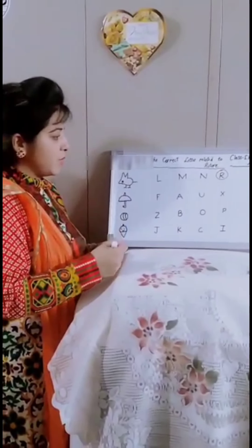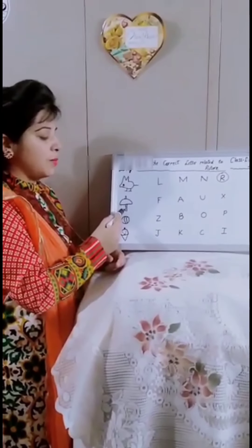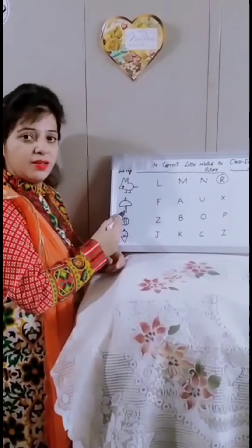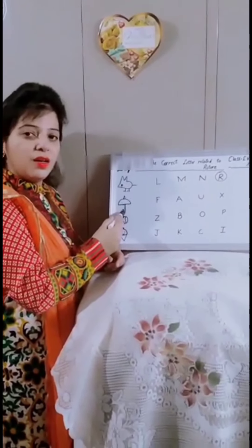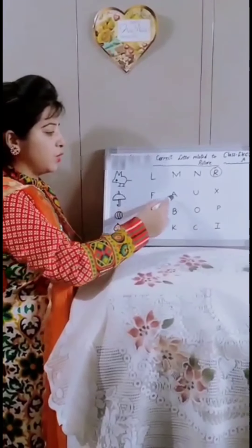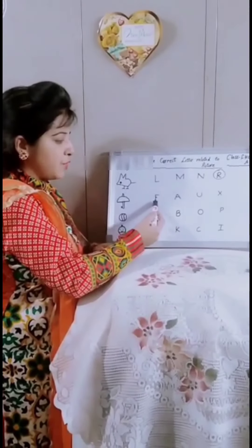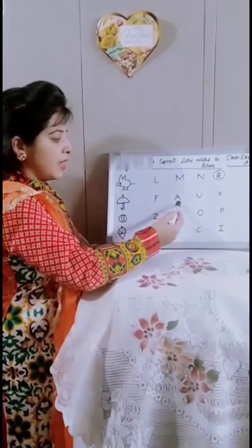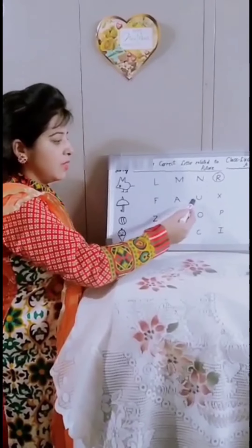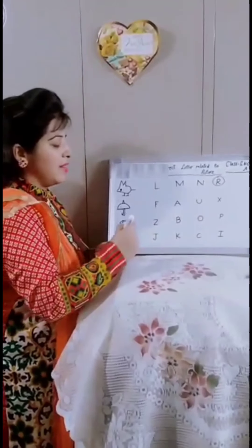Our next picture is U for umbrella. Now we will find out the correct letter. F for fish? A for apple? U for umbrella. Now we will circle it.